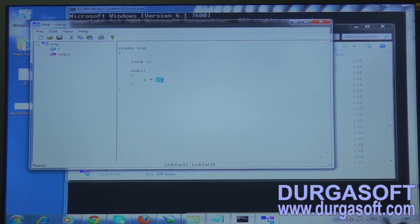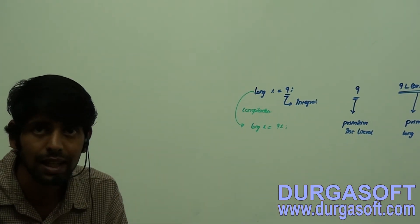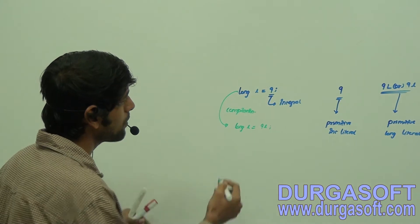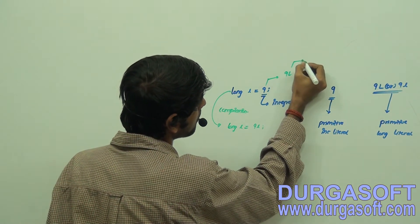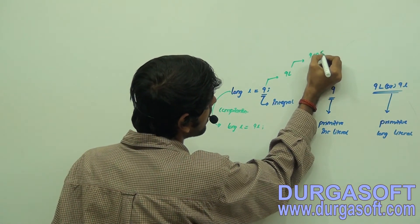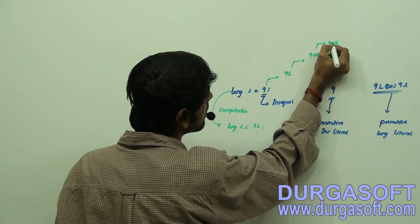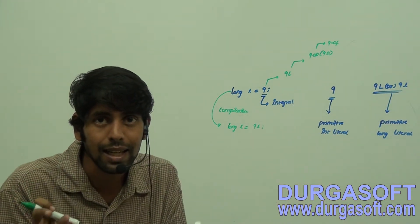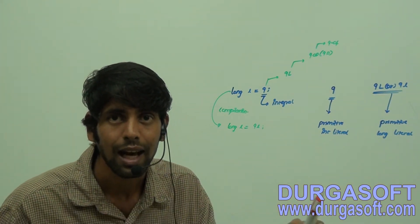The value is the same and the literal is the same, but the literal type is being changed. If it is just 9, it is int type. If it is 9L, it is long type. If it is 9.0d or 9d, it is double. If it is 9.0f, it is float. The values are the same but the literal types are different.